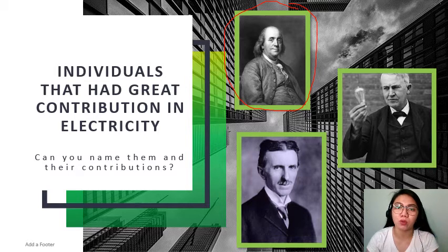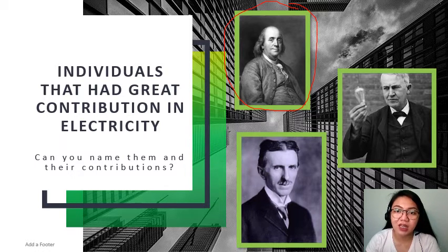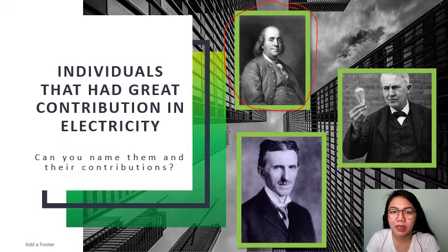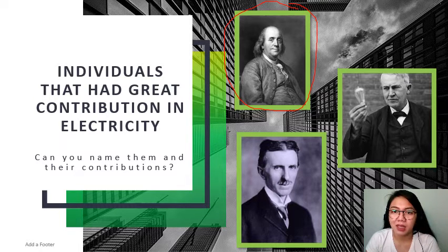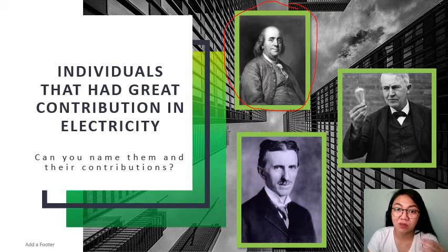Benjamin Franklin was the first person to coin and use the terms positive and negative charge. He discovered through experiments that electricity is not generated by rubbing two objects, but is rather transformed from one object to the other. Franklin also discovered that positive and negative charge is always balanced in all objects in nature, and this balance is achieved by transfer of positive charge from a higher charge to a lower charge body. This principle is the conservation of electricity. Benjamin Franklin was the first person to use those terms.